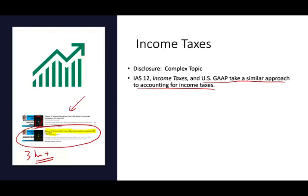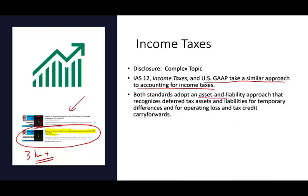Many international students listen to my recording and are good to go — they're able to understand the material. They use a similar approach: what's called the asset-liability approach, which recognizes the deferred tax asset and deferred tax liability for temporary differences, operating losses, and tax credit carryforwards. This means when computing differences between income tax and accounting, there are two separate books — the tax record and the accounting record.